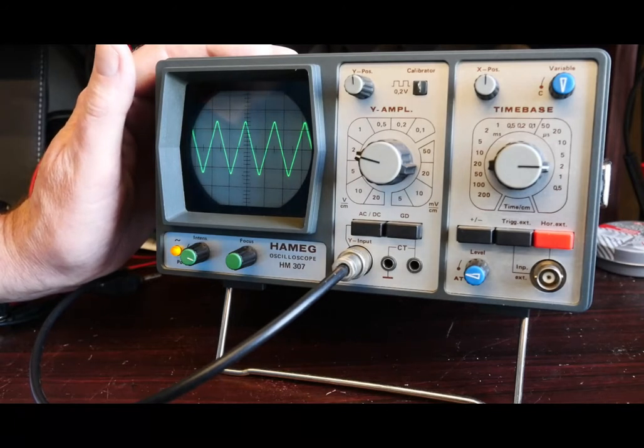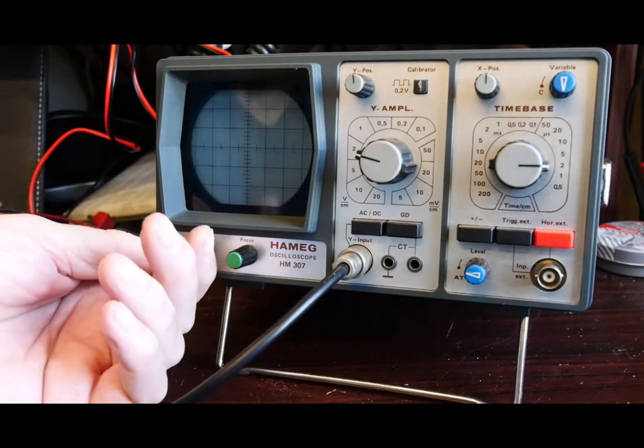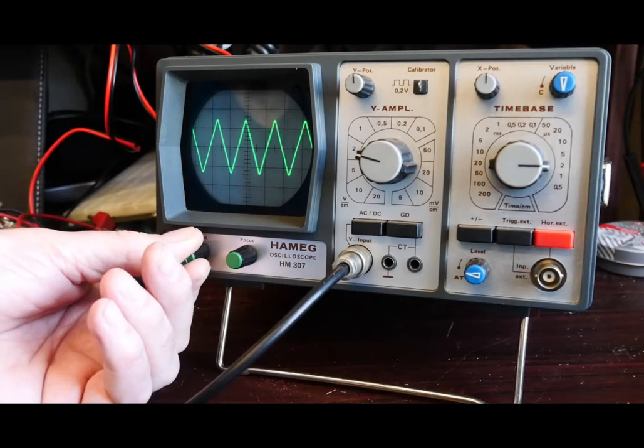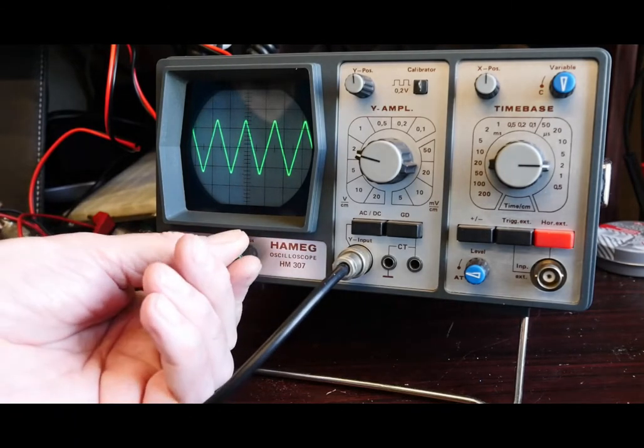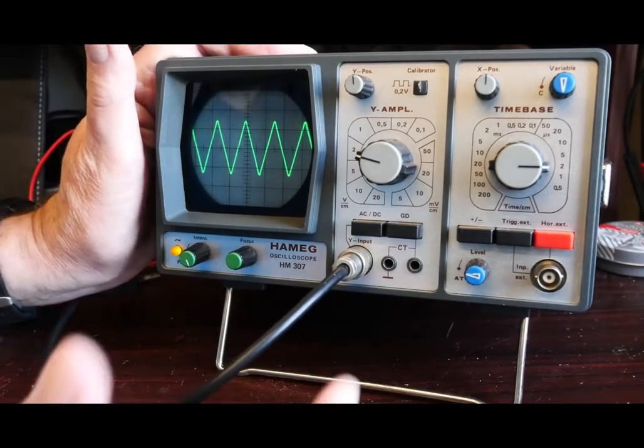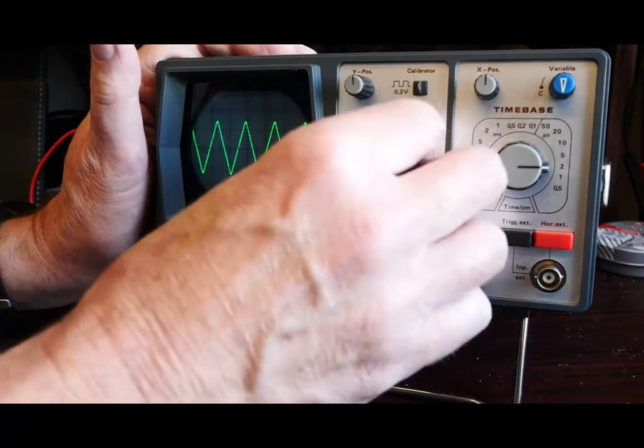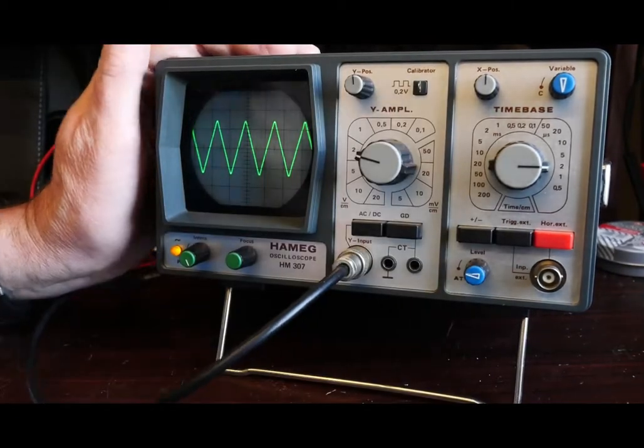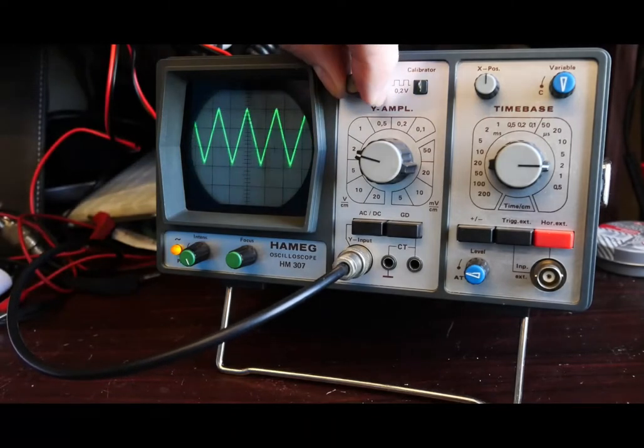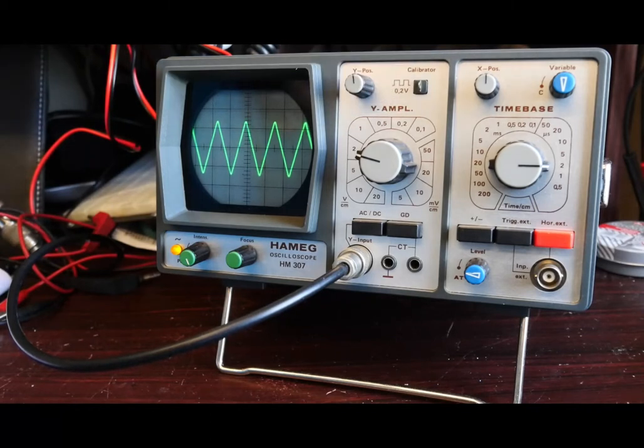As you can see, it's displaying a sawtooth wave here from my signal generator. We've got on/off and intensity there, so we can adjust the intensity of the trace. That's the focus knob. It's a single channel scope. Here we've got the AC/DC coupling. This is the volts per division. This allows us to adjust the Y position of the waveform.